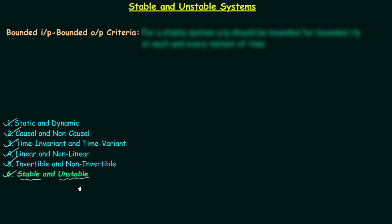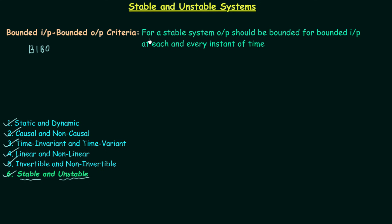To understand stable and unstable systems, we must know what is the BIBO criteria. BIBO criteria means bounded input bounded output criteria. BIBO is an abbreviation for bounded input bounded output, and according to this criteria, for a stable system the output should be bounded for bounded input at each and every instant of time. So if you provide a bounded input to your system and your system generates a bounded output, then the system is a stable system.